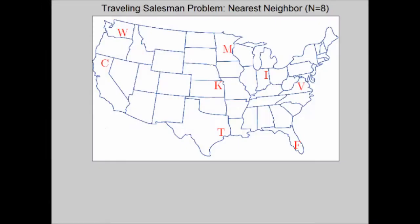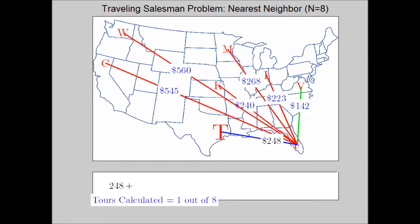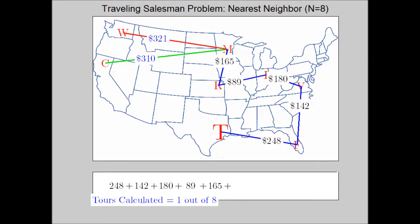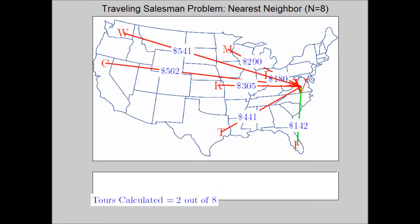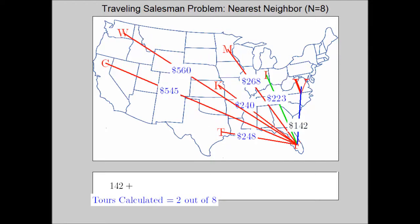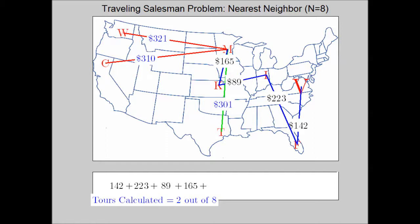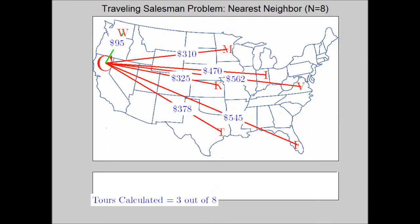We can complicate things a little bit by adding three more cities: Washington, Kansas, and Indiana. Now as we work through this process there are many more options. It's quite complicated to show the complete graph for eight cities because of the large number of edges. Nevertheless, what you're seeing here is the options as the traveler moves along and goes through each tour one at a time.